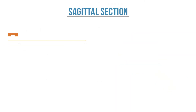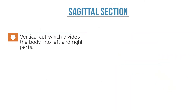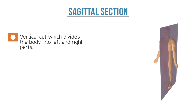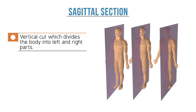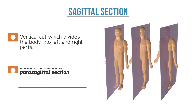A sagittal section is a vertical cut which divides the body into left and right parts. You can make this cut along any part of the body. If the cut does not result in a symmetrical left and right side, it is called a parasagittal section.